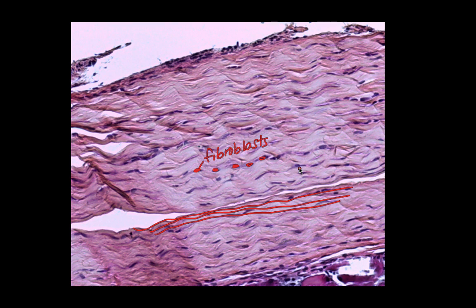We find dense regular connective tissue in things like tendons and ligaments. In dense regular connective tissue, generally the fibroblasts are going to kind of line up, all in the same row.